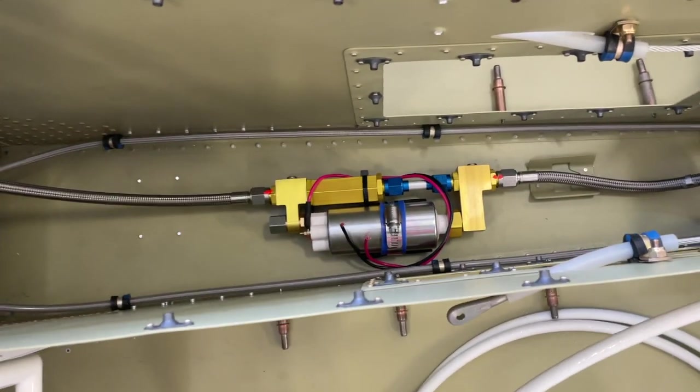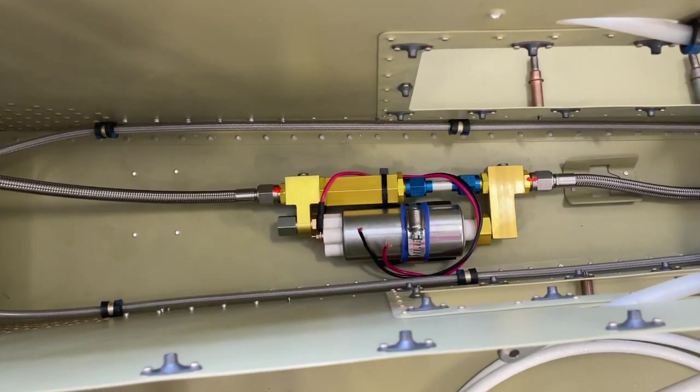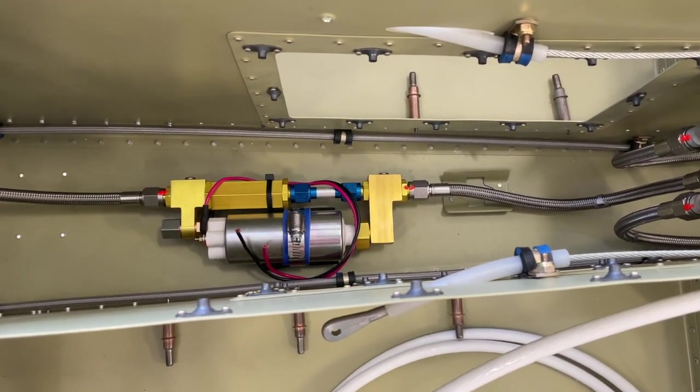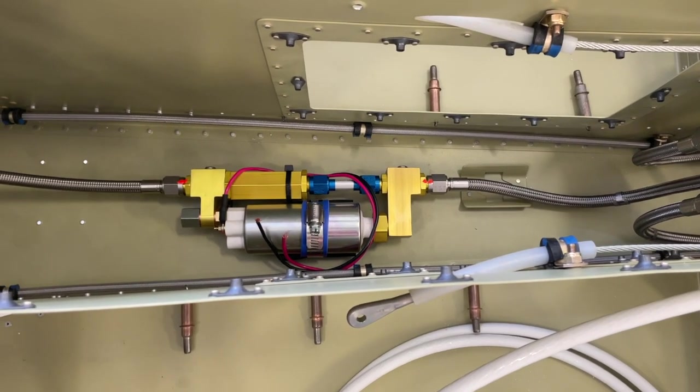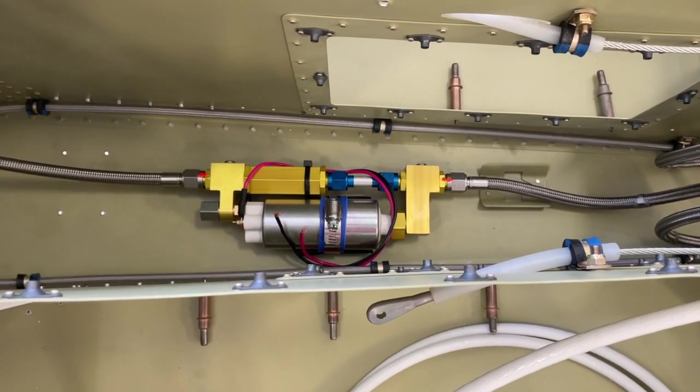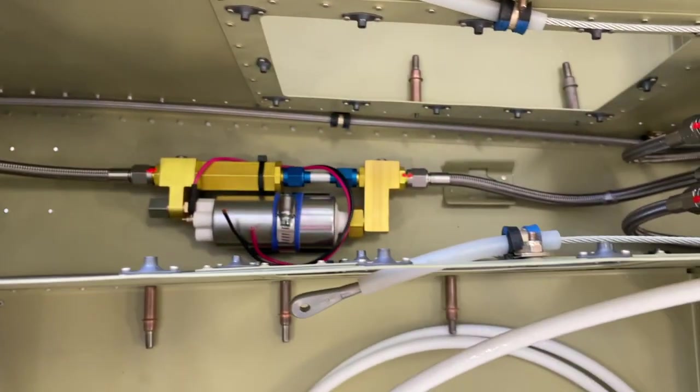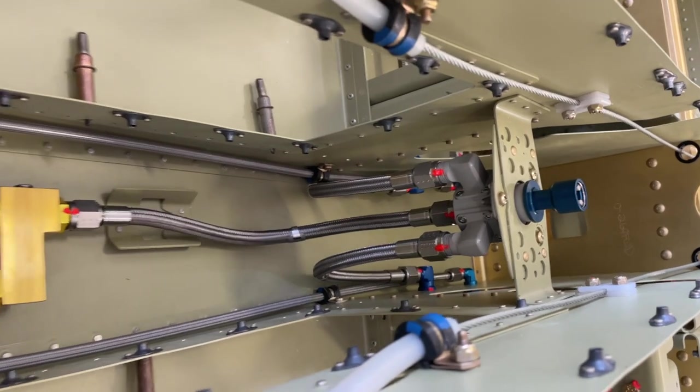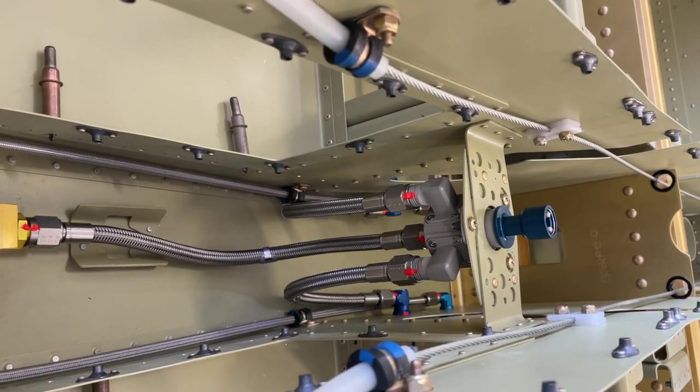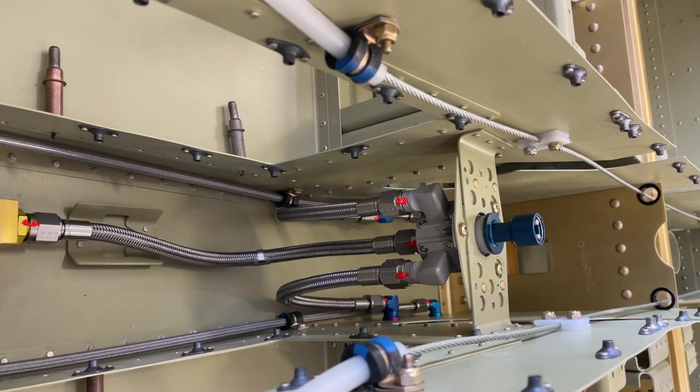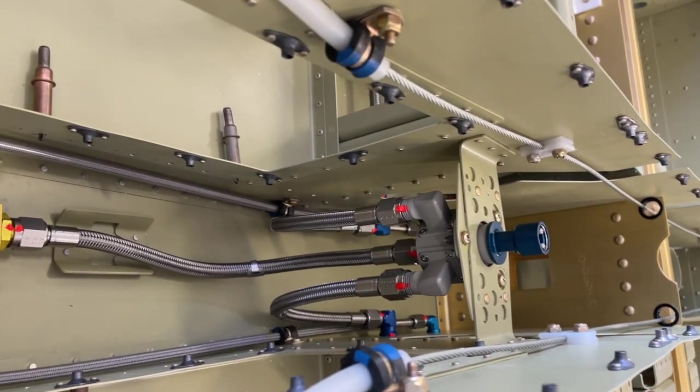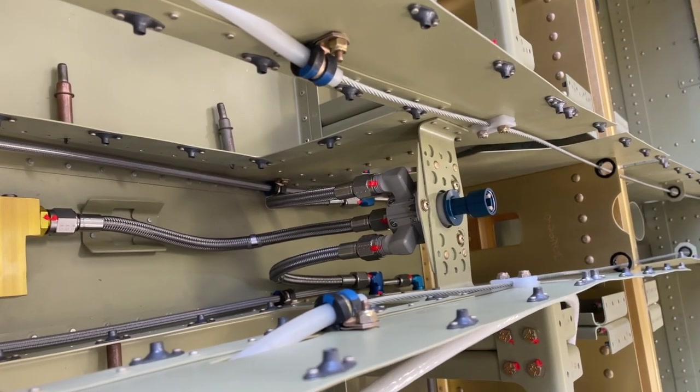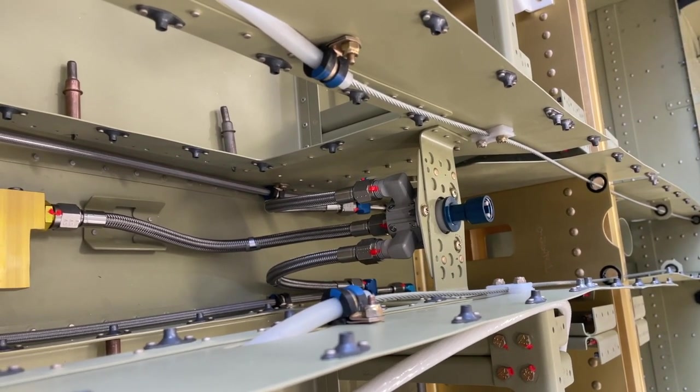Then we come to the fuel pump. This is the Airflow Performance fuel pump and you'll notice there is no filter here because I went with the wing root filters that AS Aircraft Specialty uses. This goes straight to the valve. This is just a regular Andair, I think it's the FS20X7 valve or something like that, bought from Vans Aircraft.